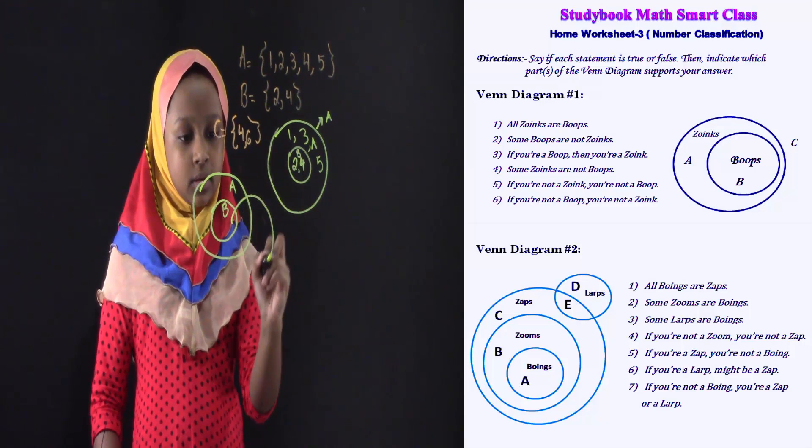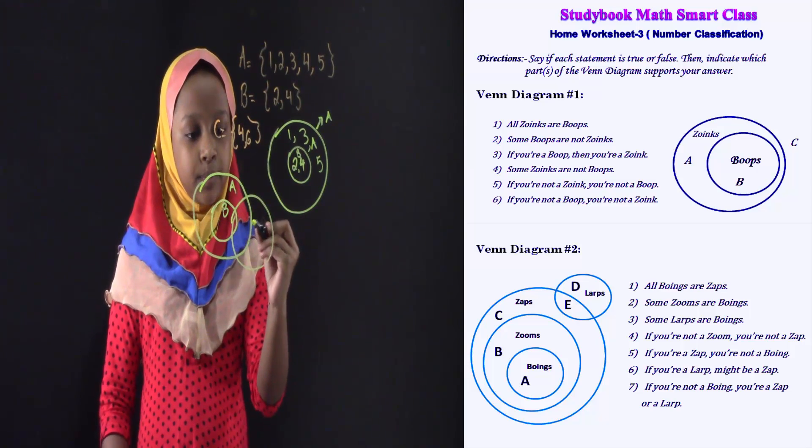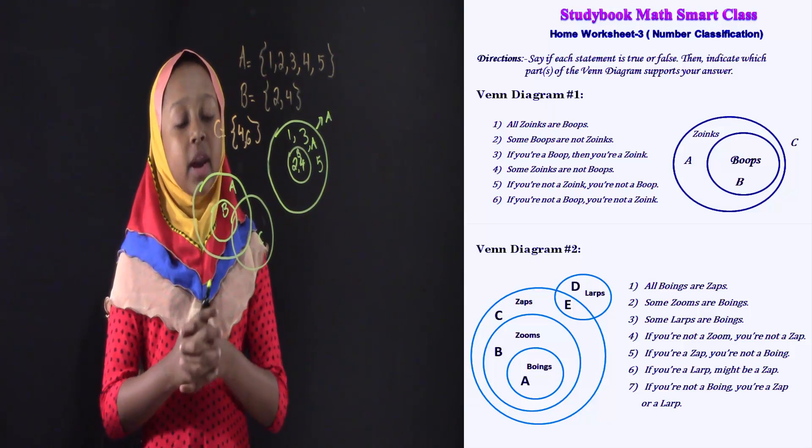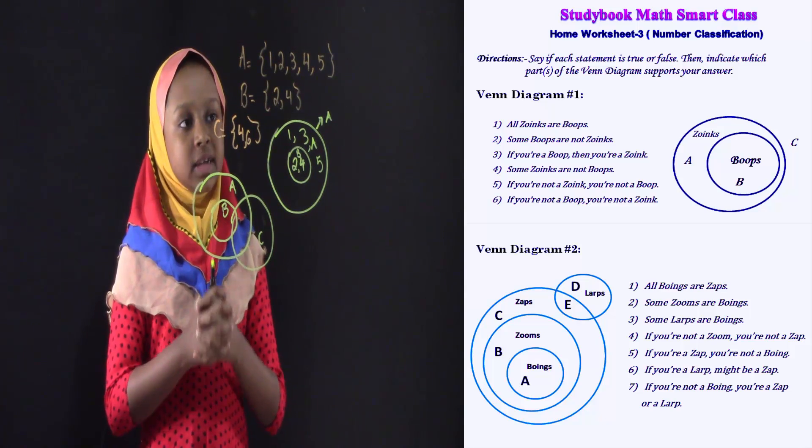Now, I'm going to draw another one, since I added another one, C. So, in C, there's also, in all of them, we have one number that is the same, four.